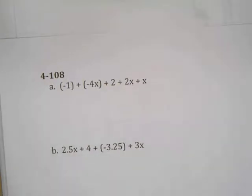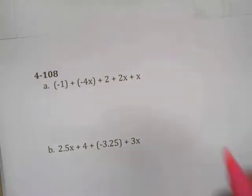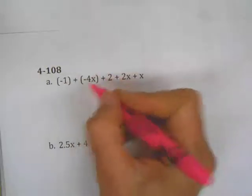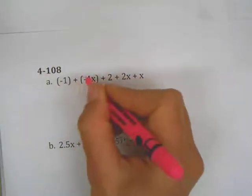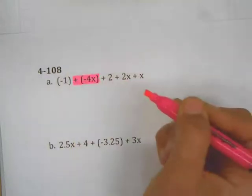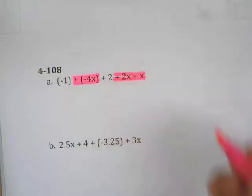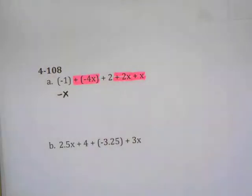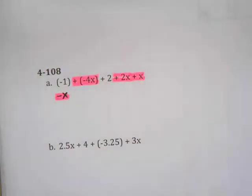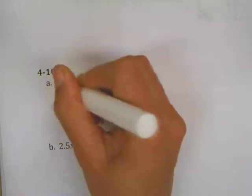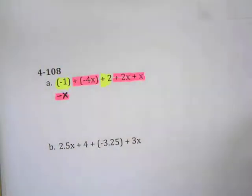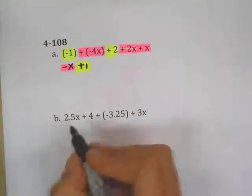You're not always going to have algebra tiles, so I'll use highlighters. Starting with variables first — that's the standard way. I have a plus four x and plus two x, so that's negative two x. Negative two x plus x gives me negative x. With the constants, negative one plus two gets me a plus one. So the simplified expression is negative x plus one.